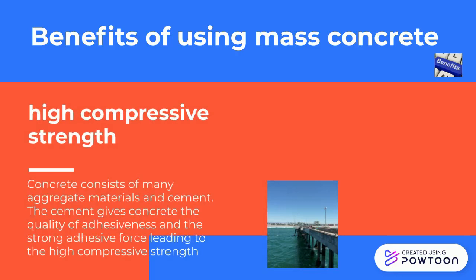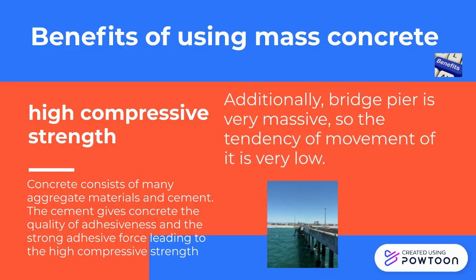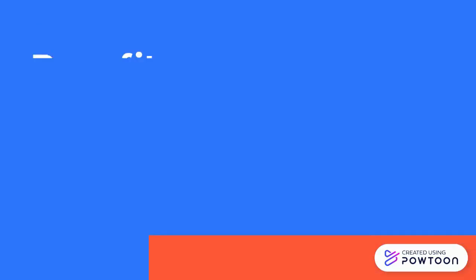Concrete consists of many aggregates, materials, and cement. The cement gives concrete the quality of adhesiveness and a strong adhesive force, leading to high compressive strength. Additionally, bridge pier is very massive, so the tendency of movement is very low.